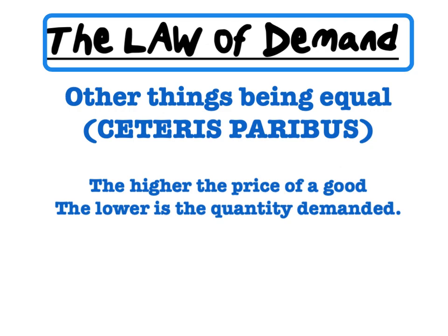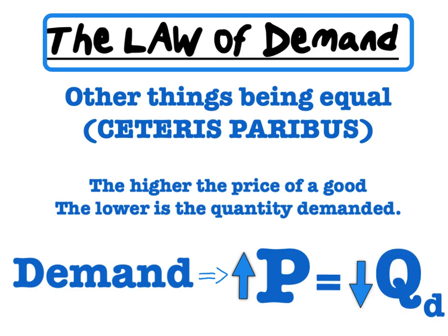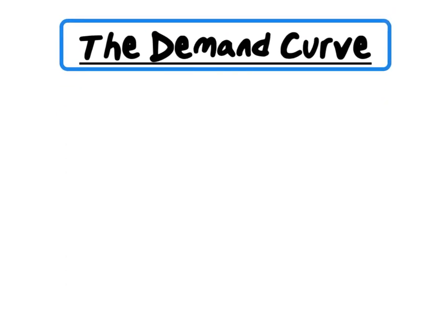If prices increase, our consumers will demand less. The law of demand is therefore: an increase in price will lead to a decrease in quantity demanded. Having looked at our definition and law, now it's time for the demand curve. With price on our y-axis and quantity on our x-axis, we are going to look at our demand curve.